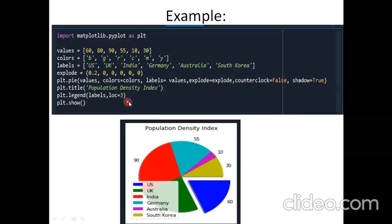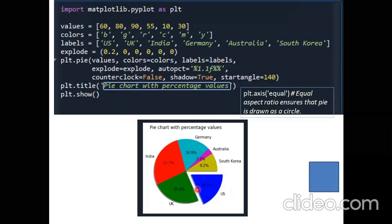For showing percentage values, we already know there is autopct. If you only pass labels without specifying them again in legend, it will take labels from the function by default. The output shows each slice with one decimal place percentage calculated automatically.